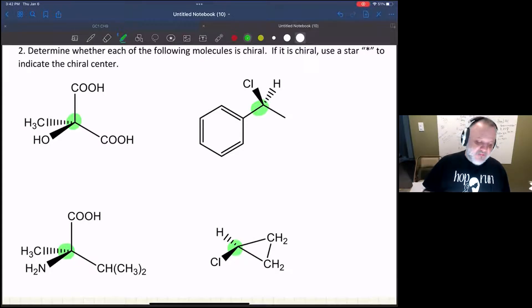Let's take a look at the first one. Is this carbon got four different groups? Look right here—obviously not. Those are both carboxylic acid groups, so they're not going to be chiral because it's the same group attached to that carbon.